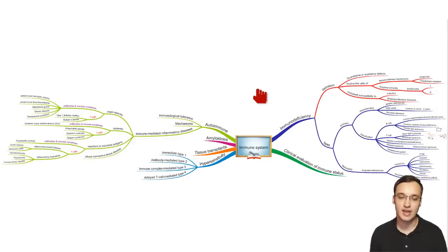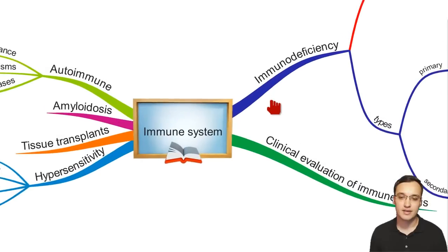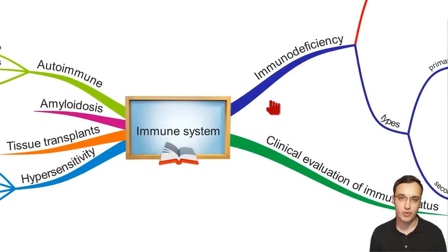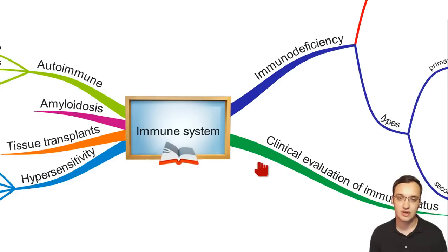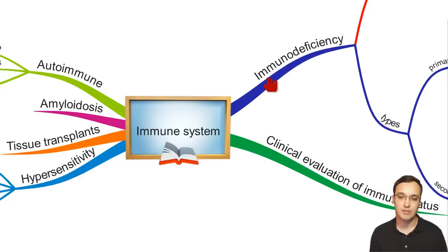What do you know about IgA deficiency? This is an immune system disease — one of the branches of immune system pathology. I've drawn six branches of immune system pathology covering pretty much everything you have to know, and IgA is part of an immunodeficiency.